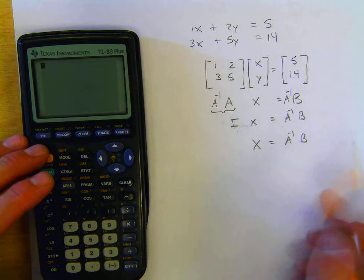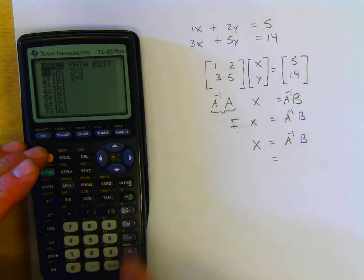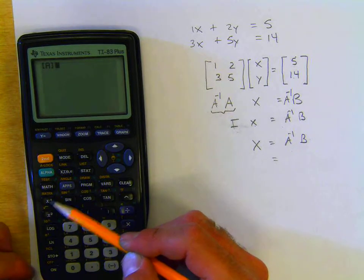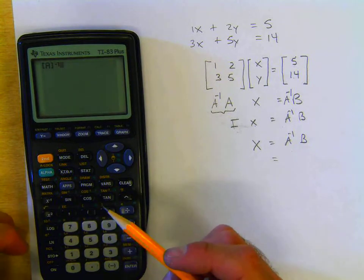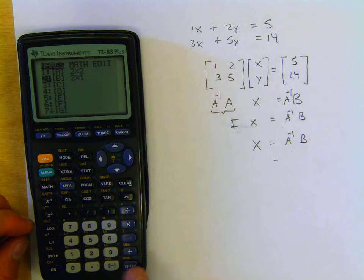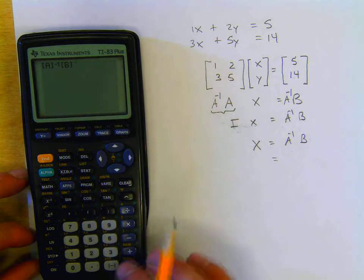So now, in order to find this in our calculator, we're going to go matrix A, and the key right here, that's x to the negative, that means inverse. Then we can go matrix B. So now we have A inverse times B. We can press enter.